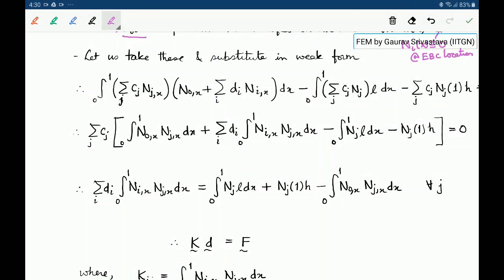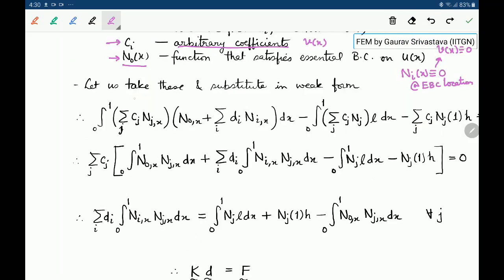Now let us take these and substitute them in the weak form. This V,x becomes this expansion. And again here this is V and this is V at 1.